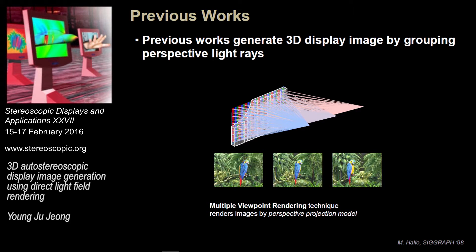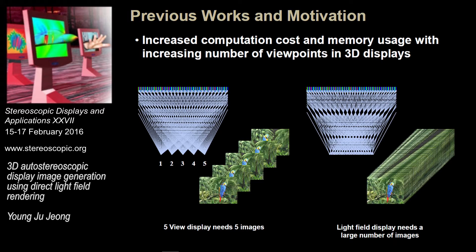This slide shows the previous approach. Since a 3D display has a large number of light rays in different directions, it is difficult to process. Previous methods tried to make a group of light rays that converge to some viewpoint, so this group of light rays can be interpreted as an image. Since the viewpoints are apart from each other, the group of images can be interpreted as multiple images. However, these conventional methods have severe problems.